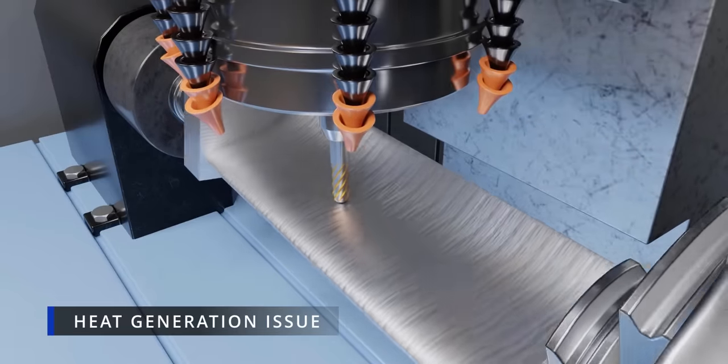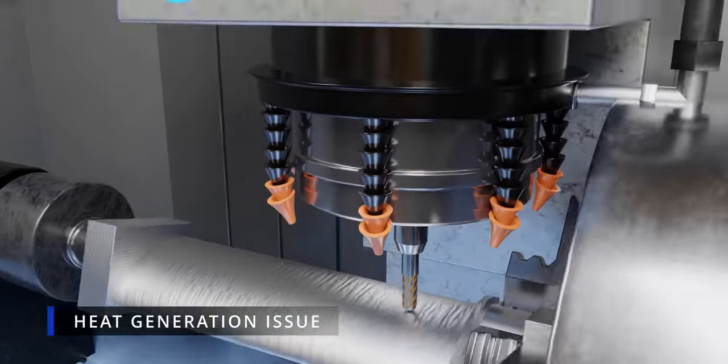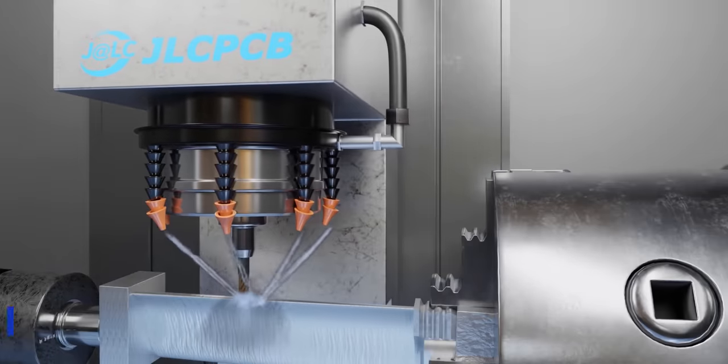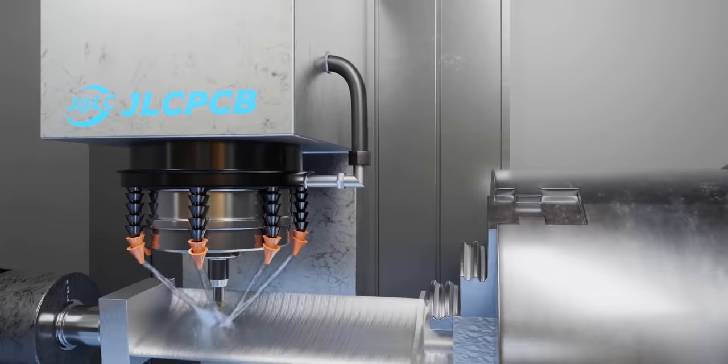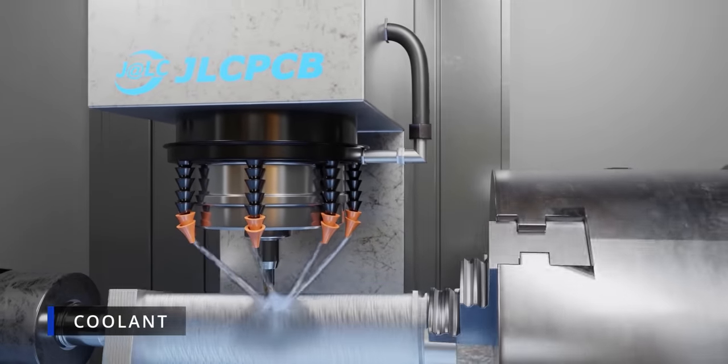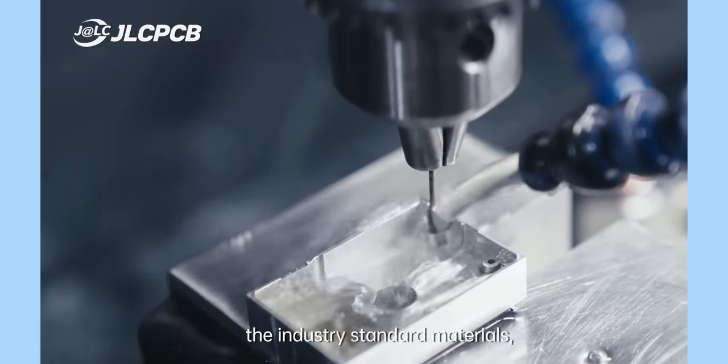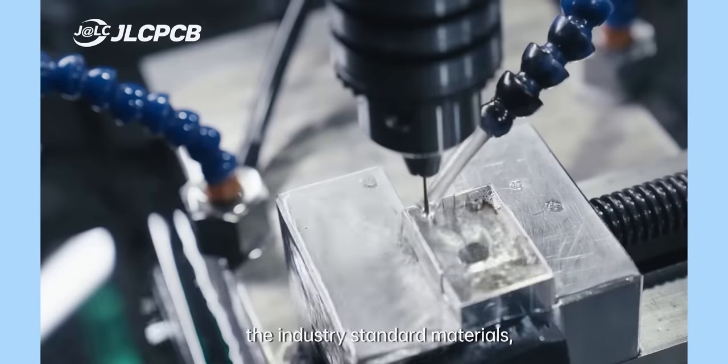Any machining operation generates heat. Without addressing this, the heat can easily deform the material and affect machining accuracy. The CNC machine uses a coolant arrangement which can be controlled through M code. This real footage provided by JLCPCB shows the details of the cooling of the tool and workpiece.